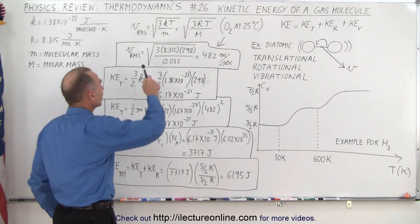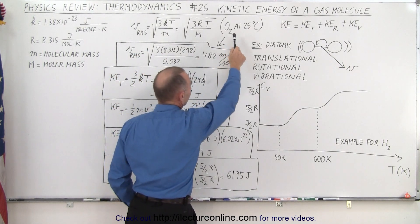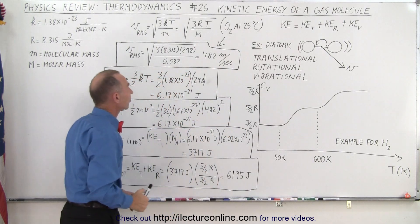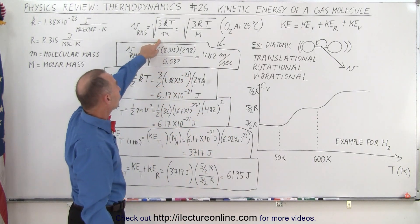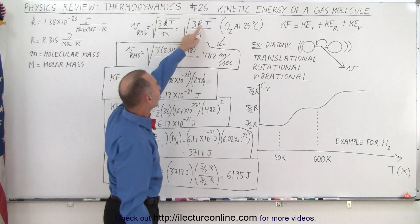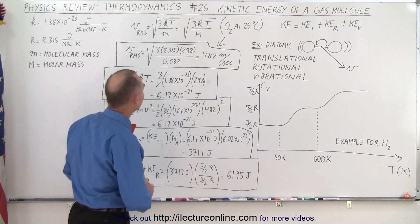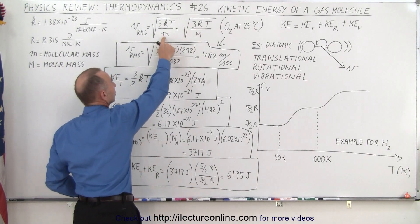So remember that the RMS velocity we've seen before, let's say for oxygen, a diatomic molecule oxygen at 25 degrees Celsius can be calculated as such, and here we have the explanation what those variables mean. There's the gas constant and there's a gas constant for a single molecule which is simply R divided by Avogadro's number. M means the mass of a molecule.